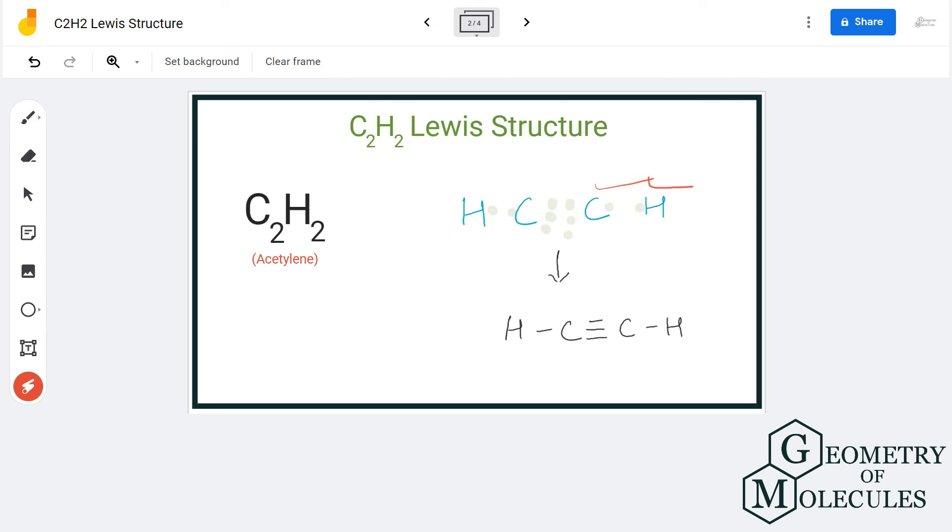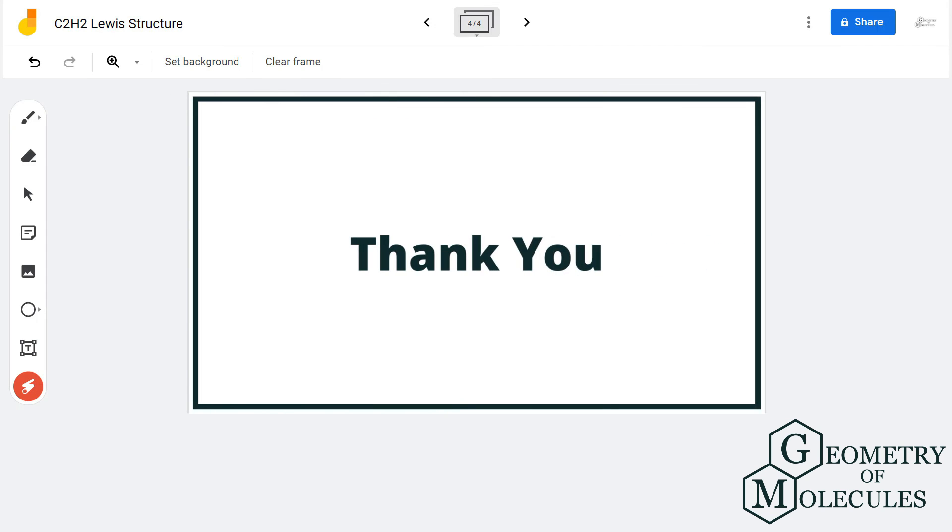This is true for both carbon atoms, and as the octets of these two carbon atoms are complete as well as hydrogen has a stable structure, this is the Lewis structure for C2H2, in which there are no lone pairs and the octets of all atoms are complete. For more videos on Lewis structure, molecular geometry, and polarity of molecules, subscribe to our channel, and thank you for watching.